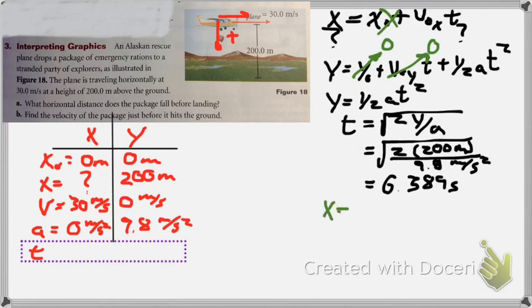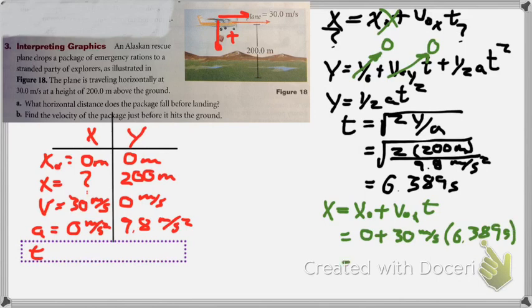And in the X direction, we use the first equation again. X equals X initial plus V initial X times time. And we can just plug and chug at this point. 30 meters per second is our velocity. And it's traveling for 6.389 seconds. And it's going to travel 192 meters. So what horizontal distance does the package fall before hitting the land? It travels 192 meters.